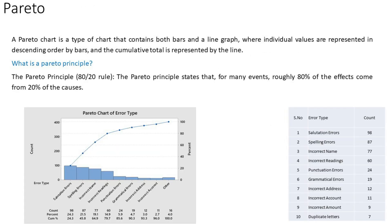The next tool is called the Pareto chart — a type of chart containing both bar and line graphs, where individual values are represented in descending order by bars and the cumulative total is represented by the line. It works on the Pareto principle, the 80-20 rule: roughly 80 percent of effects come from 20 percent of causes. If you identify that 20 percent of causes, you will create an 80 percent impact on the process. I have separate videos on Pareto diagrams — links in the description.